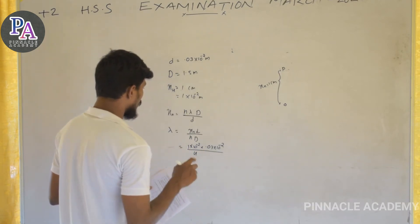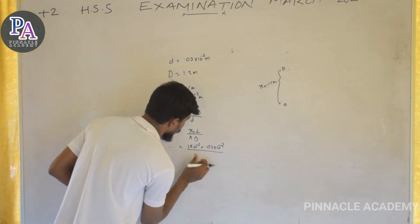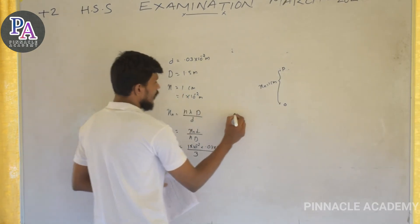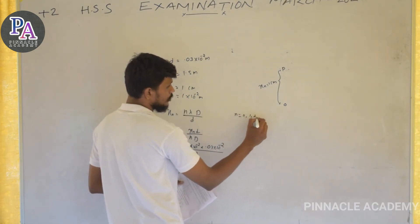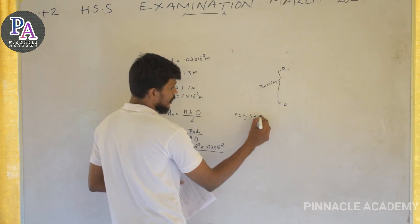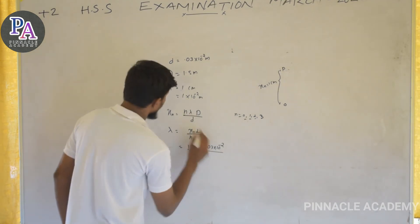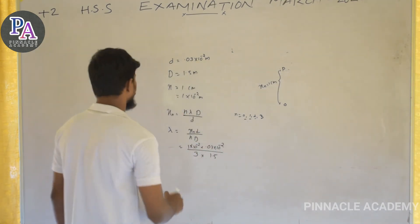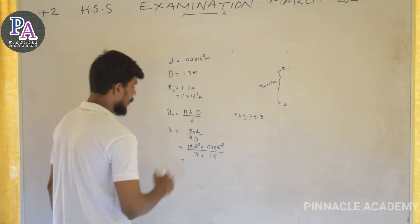The value of n for the fourth bright fringe: n can be 0, 1, 2, 3. For the fourth bright fringe, n equals 3. Substituting: D is 1.5, and we use n equals 3 with D equals 1.5 in the formula.